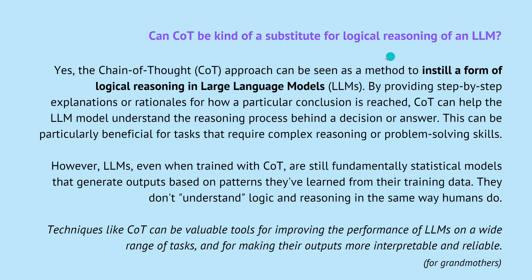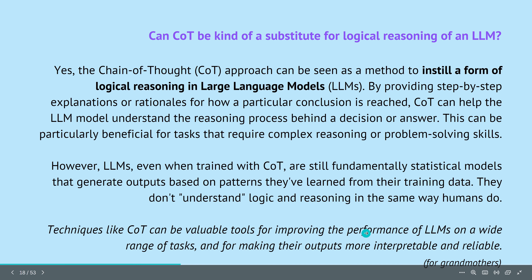Now comes the part where you start to think: can chain of thought be a kind of substitute for some reasoning, maybe even logical reasoning, when interacting with an LLM? I think yes — the chain of thought approach can be seen as a method to instill a form of reasoning into LLMs. You provide a step-by-step explanation or rationale for how a particular conclusion is reached. Even though these are still statistical models that generate output based on patterns learned from training data and don't understand logic the way humans do, techniques like chain of thought can be valuable tools for improving LLM performance and making outputs more interpretable and reliable.